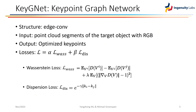Our Key-GNet is based on the graph convolution network EdgeConv, which is designed specifically for point clouds. The input of the network is point cloud segments of targeted objects with RGB values, and the output is optimized keypoints. Our network is supervised by two loss terms: a Wasserstein distance loss for histogram similarity measure, and a dispersion loss for keypoint sparseness measure.